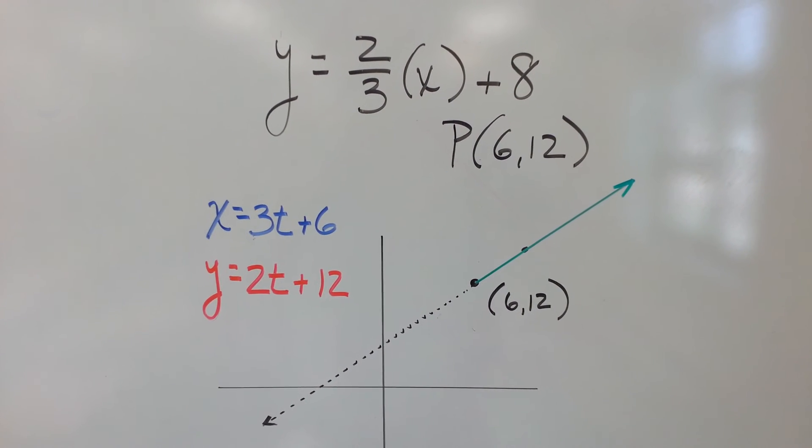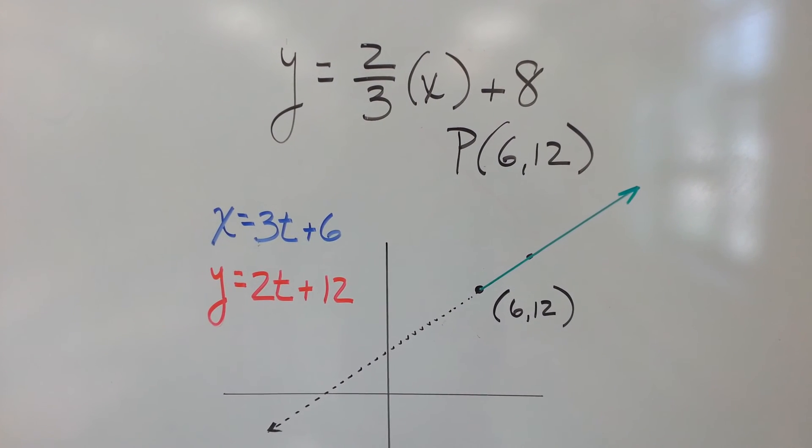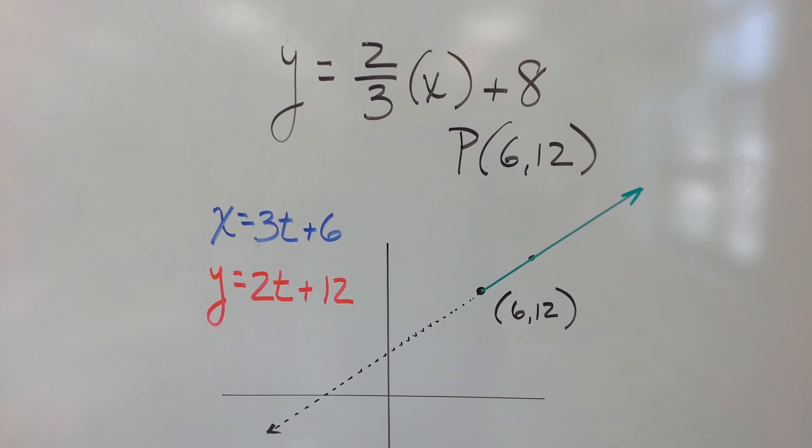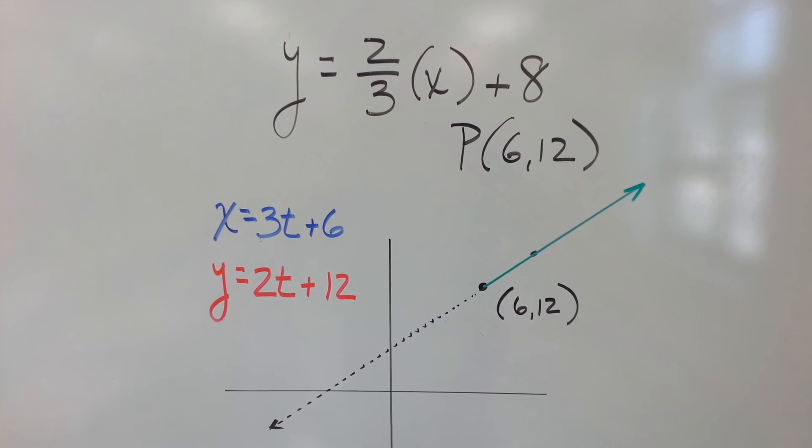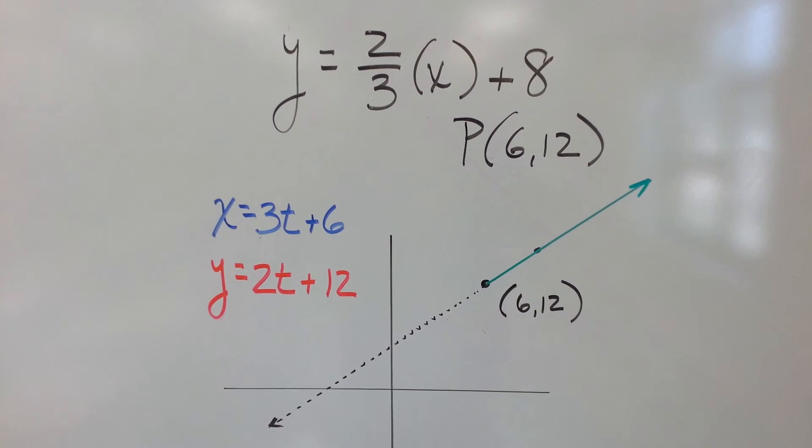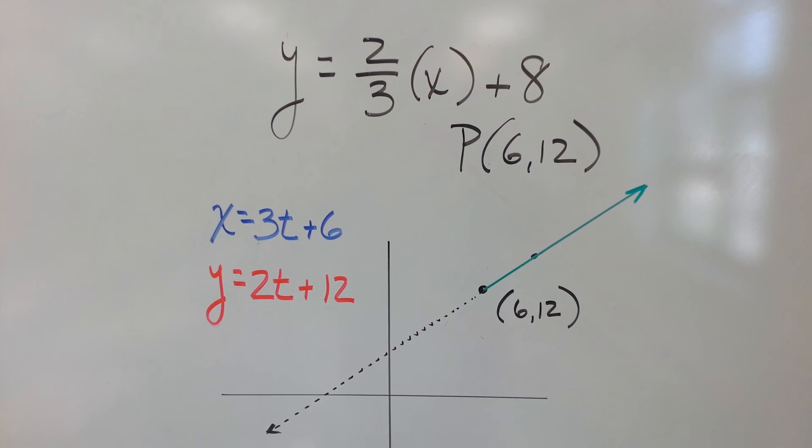But at time 1, where's this thing going to be? You get it? You're going to put a 1 in for the t, and you're going to find out that this thing just moved up 2 and over 3, up 2 over 3. So you can see that that corresponds to the slope.